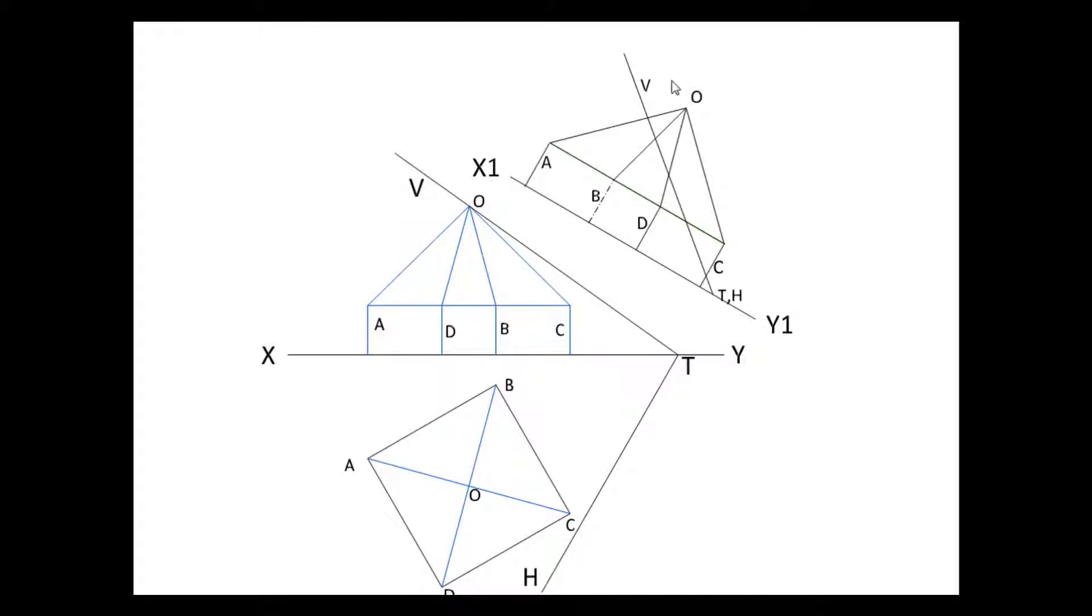It'll just allow you to see what cuts what, or help you reference lines from one view to another. So what we do is we take all the points where the plane cuts them and bring them down into our plan. We can see where the plane cuts our line OA. We can bring down to where it crosses the line OA here as well.